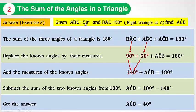Exercise 2: Given ABC equals 50 degrees and BAC equals 90 degrees since this triangle is right at A. Find the measure of angle ACB. BAC plus ABC plus ACB equals 180 degrees. BAC equals 90 degrees, ABC equals 50 degrees. 90 degrees plus 50 degrees plus ACB equals 180 degrees. 90 plus 50 is 140 degrees, so 140 degrees plus ACB equals 180 degrees. ACB equals 180 degrees minus 140 degrees. Then ACB equals 40 degrees.